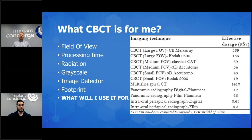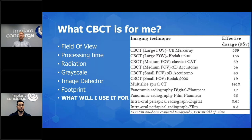Every machine has different settings and a different dose. Some machines will say the dose is as low as a panoramic, or three times the dose of a panoramic. There's no good amount of radiation, but having a slightly higher dose you're going to get a better image. A perfect example: I've seen some low-dose machines where you just can't trace that mandibular canal well. What was the point if you're placing an implant or removing a third molar and you can't see the mandibular canal? A little higher dose, and you're going to see a lot more anatomy and structures.